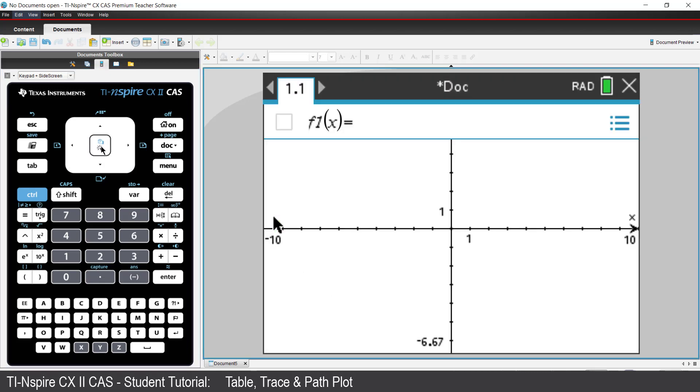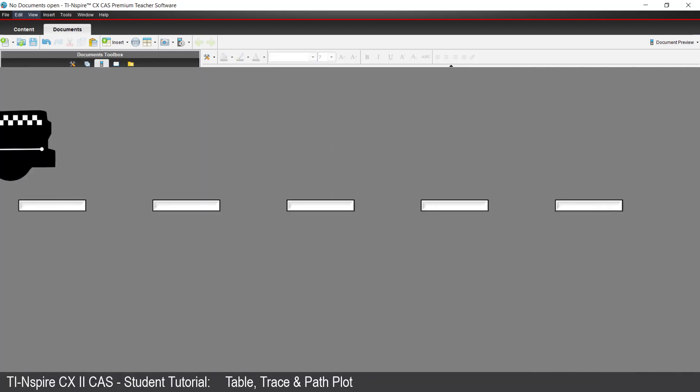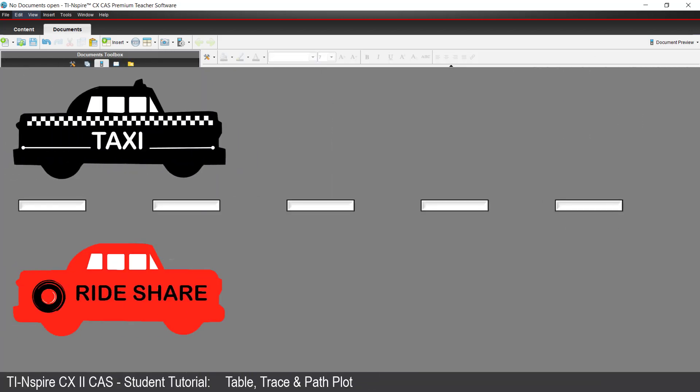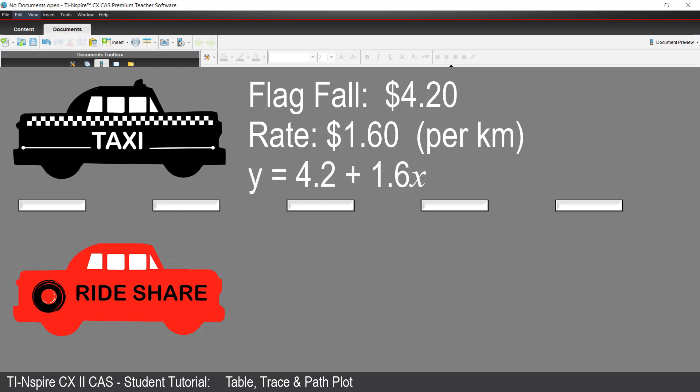A suitable context for the Table option is to compare taxi and rideshare costs. Suppose a taxi has a flag fall of $4.20 plus $1.60 per kilometre. The equation for the taxi fare would be y equals 4.2 plus 1.6x.